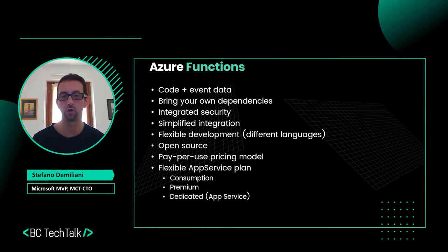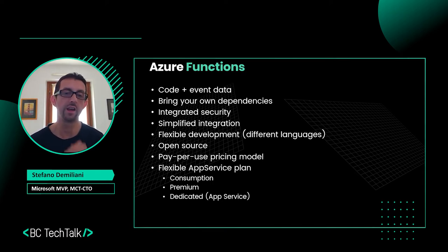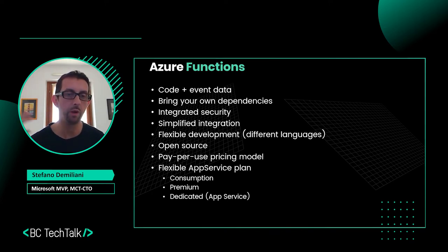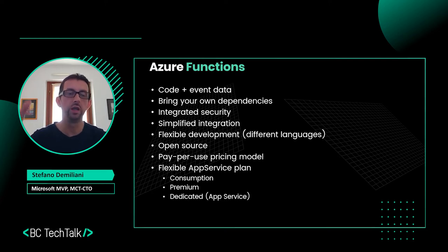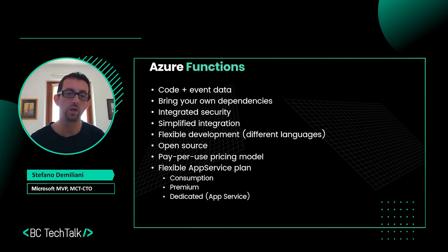Azure Functions support flexible development with different languages and tools like Visual Studio and Visual Studio Code for creation, deployment, and testing. They are open source and have a flexible pricing model — you can pay for what you use with the consumption model, or pay for what is called the App Service plan — a set of dedicated resources to run all the functions you want. On the consumption plan, scaling is handled by the platform; on the App Service plan, you are responsible for scaling.